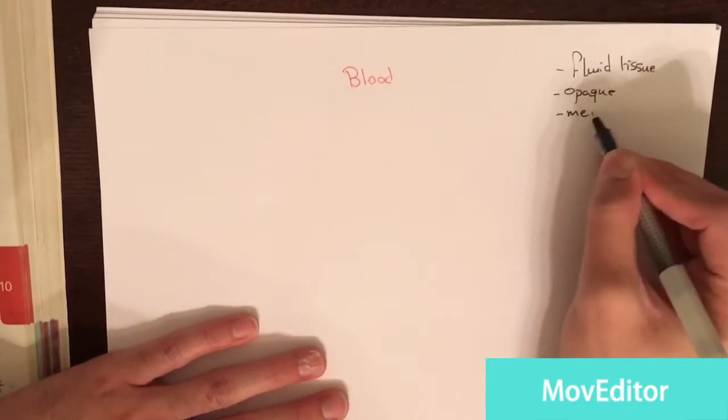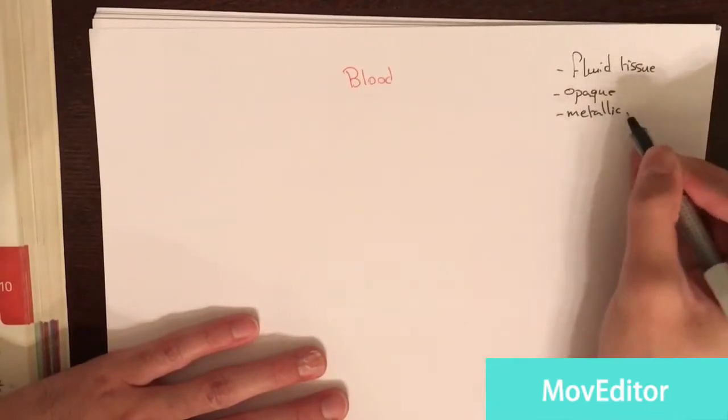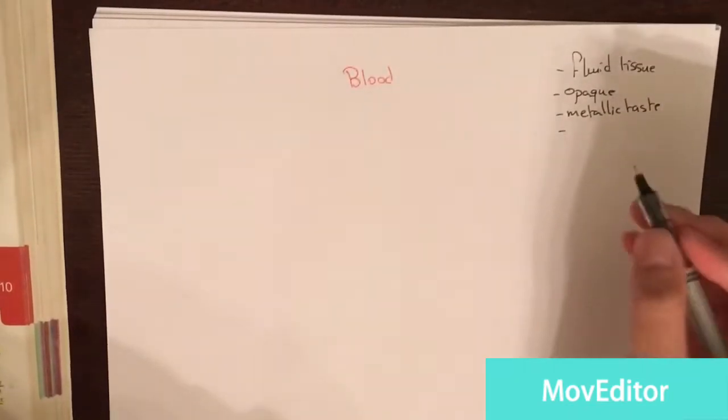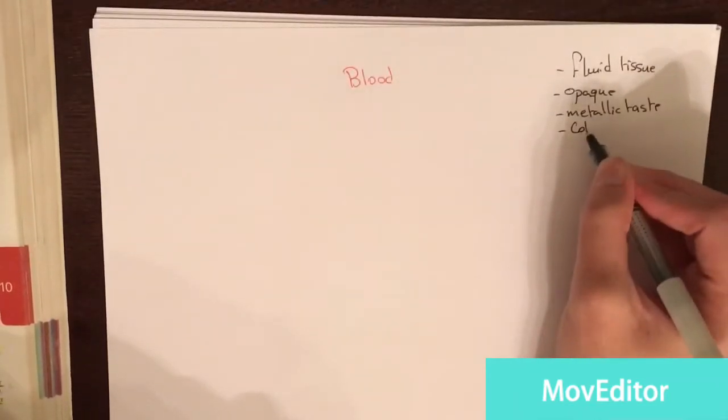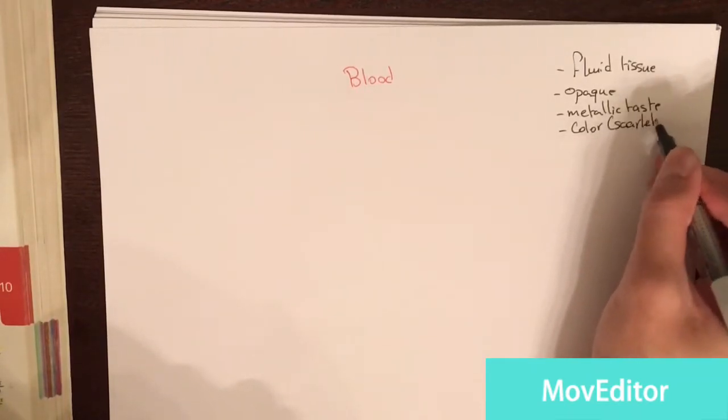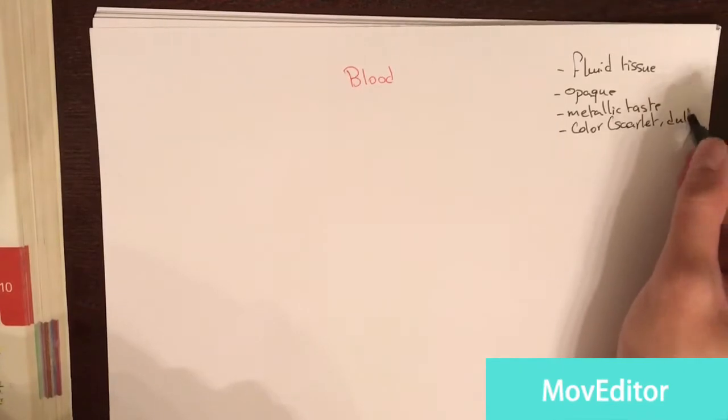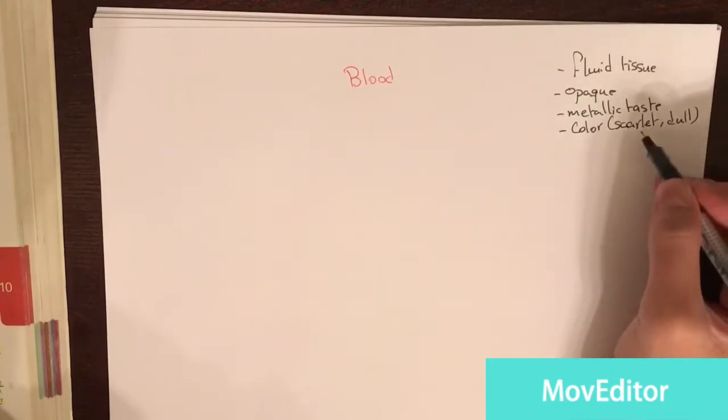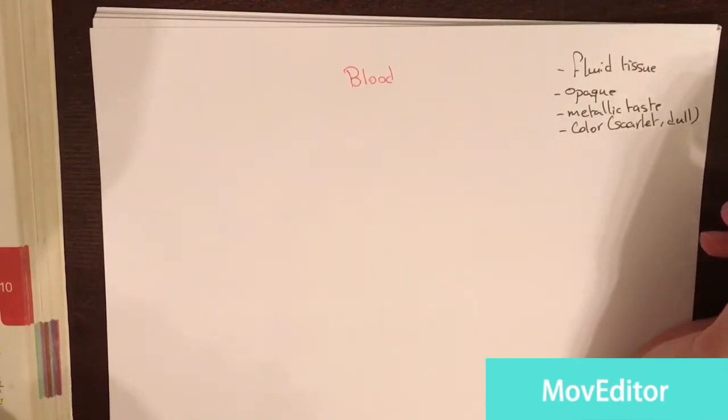Blood has a metallic taste. Blood also, the color of it varies. It can be either scarlet or it can be dull red depending on the amount of oxygen. For example, if it had high amount of oxygen, it will be scarlet red. If it had low amount of oxygen, it will be dull red.